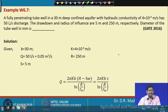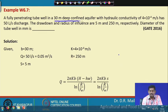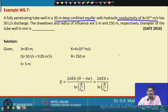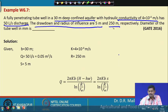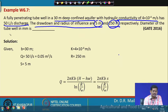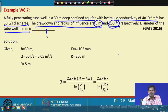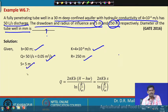Example 7: a fully penetrating tube well in a 30-metre deep confined aquifer. Thickness of aquifer is 30 m, hydraulic conductivity K = 4×10⁻⁴ m/s, discharge Q = 50 litres per second. The drawdown is 5 m and the radius of influence is 250 m. Determine the diameter of the tube well in mm.